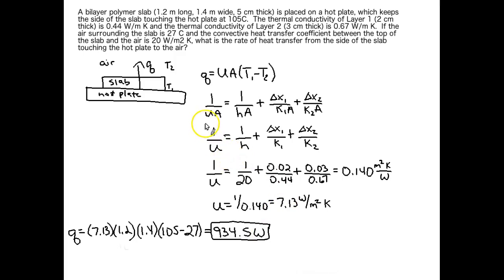I want to emphasize again that this equation for 1 over UA is not the end-all be-all equation for 1 over UA. This is for this particular scenario. So if you had three different layers in your slab, you would have to add another delta X over KA layer.